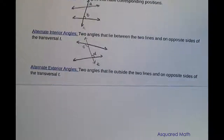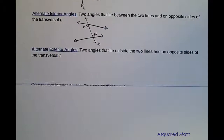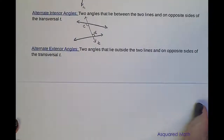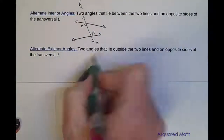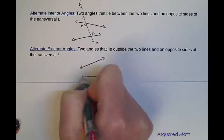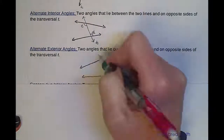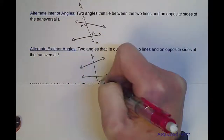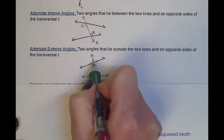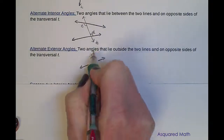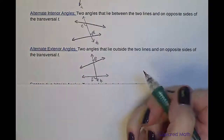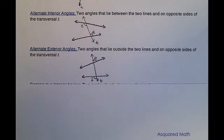The next type is alternate exterior angles. As the name suggests, these are on the outside. Drawing two lines cut by a transversal T, we're working with two angles on the exterior — so outside the two lines — on opposite sides of that transversal. We'll call them E and F. Angles E and F are examples of alternate exterior angles.